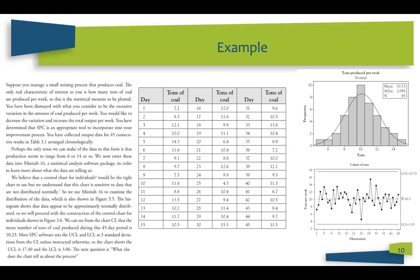Once you know the data is normal, it means you can use control charts on it. When you built the control chart, you saw that on average you are getting 10.3 tons per day. Your upper control limit is at 12 and the lower control limit is at 3. No data is outside the control limits, which means there is no special cause variation.